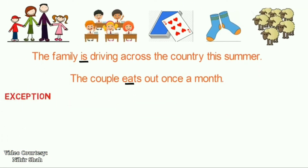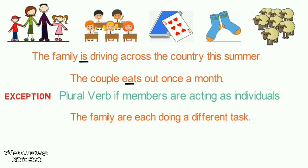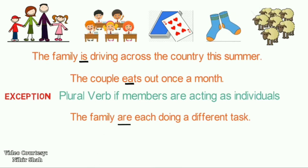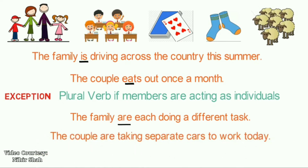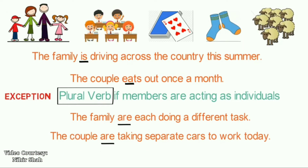But there are exceptions. We use a plural verb when the members of the group are acting as individuals. For example: 'The family are each doing a different task.' Here, not all members are doing the same task, so we use the plural verb 'ARE.' Another example: 'The couple are taking separate cars to work today.' Here, husband and wife are not going in the same car, so as they are not acting as a single entity, we use the plural verb 'ARE.'